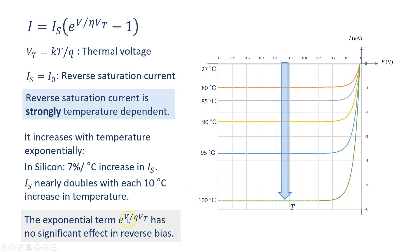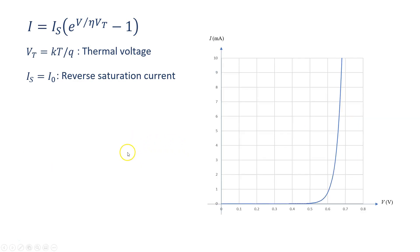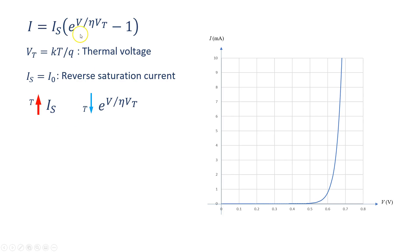The exponential term e to the power of V divided by eta·VT has no significant effect in reverse bias because V is negative, and an exponential term with a negative exponent is smaller than one and can be very much smaller than one. When the diode is in forward bias, the current is increased by temperature because of IS, but at the same time it is decreased by the exponential term because in this case the voltage is positive and e to the power of V divided by eta·VT can be a very large number.